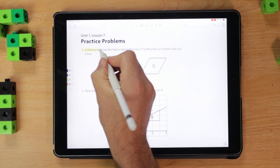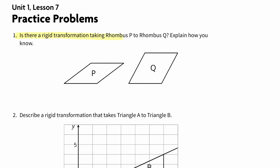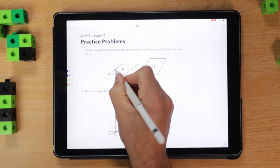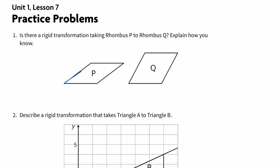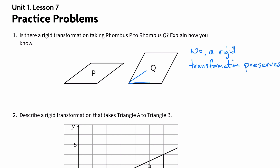Is there a rigid transformation taking rhombus P to rhombus Q? Explain how you know. Well, let's check the angles. These angles don't match up, so this is not a rigid transformation. No — a rigid transformation preserves all angle measurements.